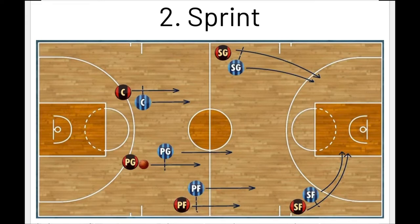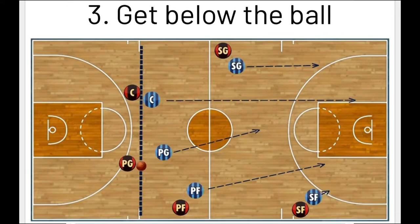You'll notice the point guard here is dribbling up, and each player is beating their position back on defense. You'll see the little slash line showing they're in position to prevent passes — we call that pocket. The third key is get below the ball. There's a dotted line drawn from sideline to sideline — the line of the ball. Every player needs to get below the ball, meaning between your hoop that you're defending and the ball. All the players' arrows are running back to stay below the ball. The main goal of good transition defense is that all players get below the ball, which means everybody needs to be held accountable in terms of running back on defense each and every time.